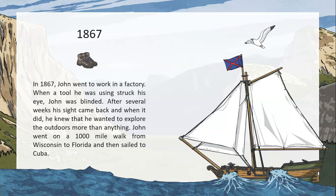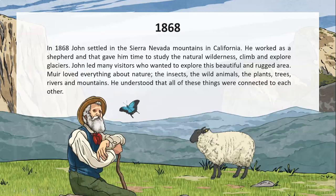In 1867, John went to work in a factory. When a tool he was using struck his eye, John was blinded. After several weeks his sight came back, and when it did, he knew that he wanted to explore the outdoors more than anything. John went on a 1,000 mile walk from Wisconsin to Florida and then sailed to Cuba. In 1868, John settled in the Sierra Nevada mountains in California. He worked as a shepherd, and that gave him time to study the natural wilderness, climb and explore glaciers.